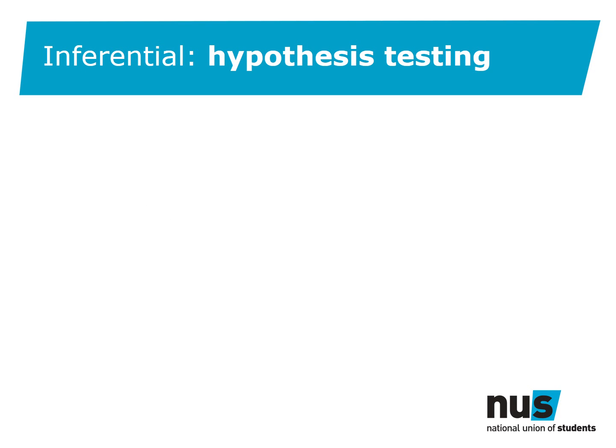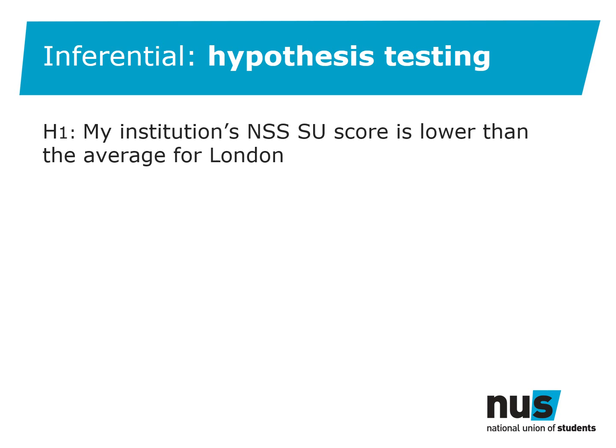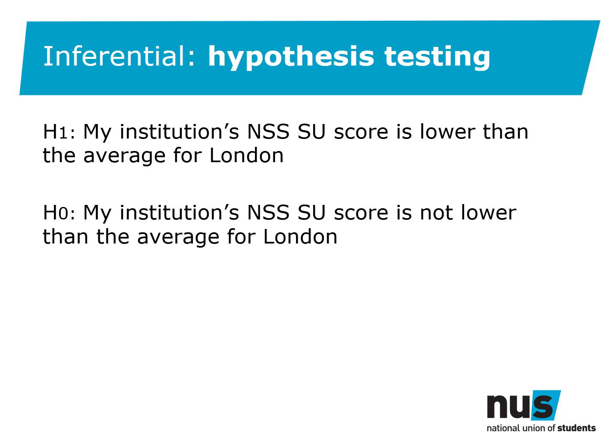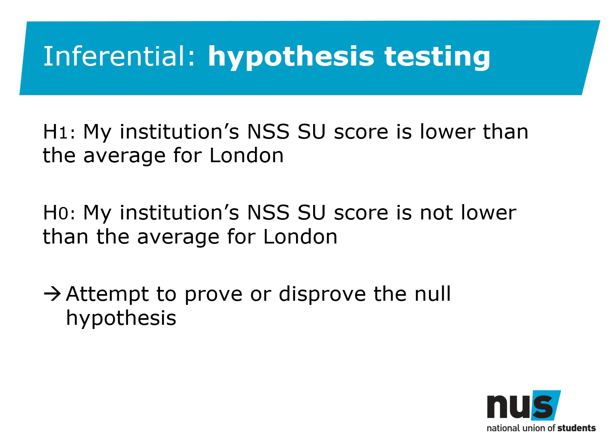So what might our hypotheses look like? We might think that our students' union score is lower than the average for London. We could arrive at this through theory, anecdotal evidence, a hunch, or through other data suggesting it's true. The question we're looking into becomes the experimental hypothesis, normally denoted by H1. But in statistical tests, we don't test the experimental hypothesis — instead, we try to disprove a null hypothesis. The null hypothesis is a statement that the effect or relationship we're looking for is absent.